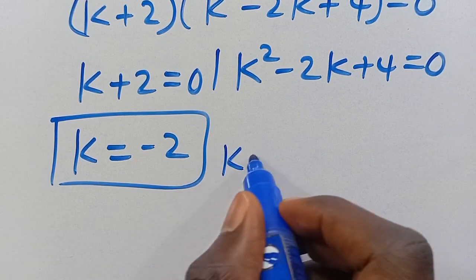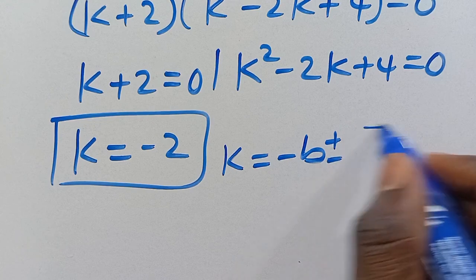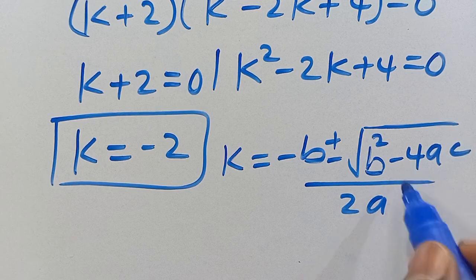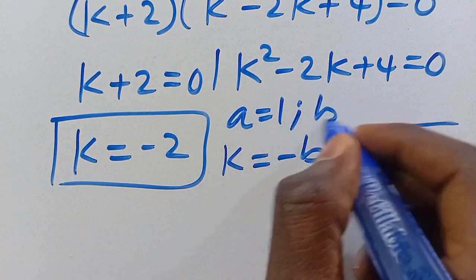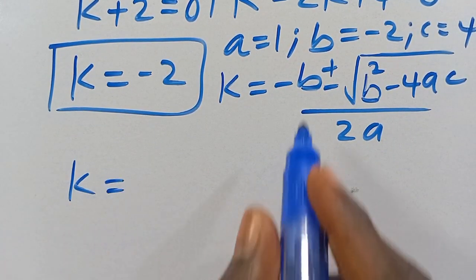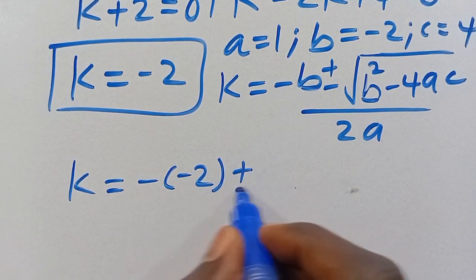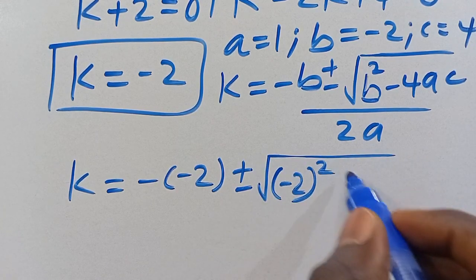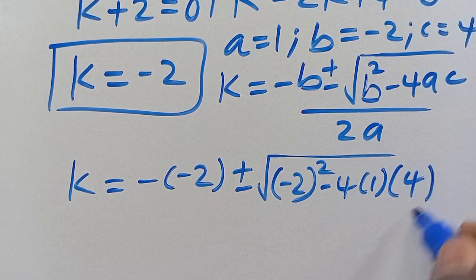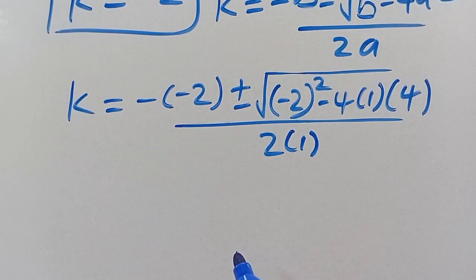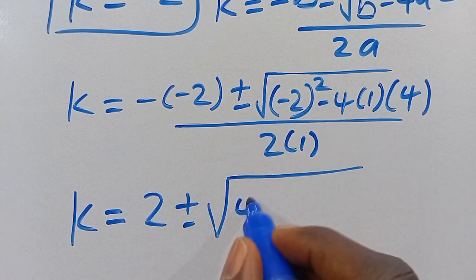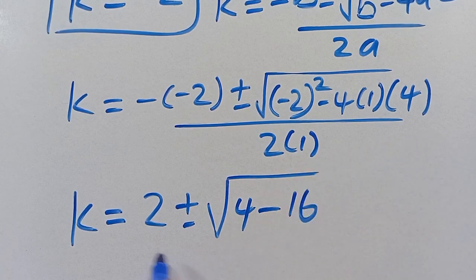Then to get the value of k from the quadratic, let's apply the quadratic formula: minus b, positive or negative root of b squared minus 4ac, divided by 2a. The parameter a is the coefficient of k squared, so a equals 1, b equals minus 2, and c equals 4. So we have k equals minus of minus 2, positive or negative root of minus 2 squared minus 4 times 1 times 4, divided by 2 times 1. That gives us 2 plus or minus root of 4 minus 16, divided by 2.